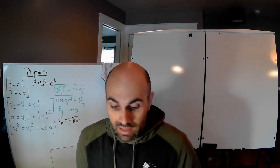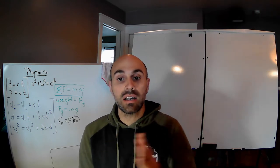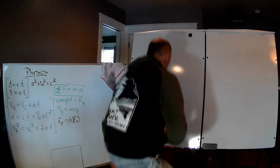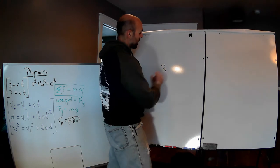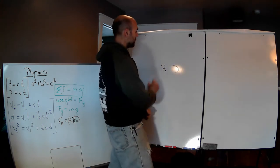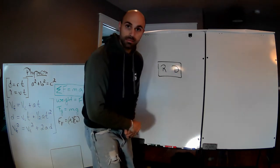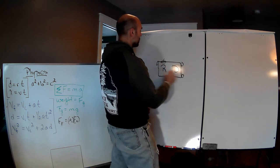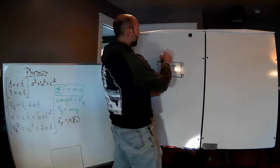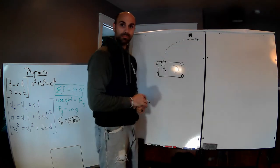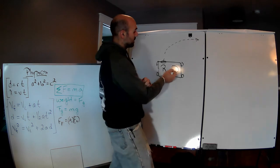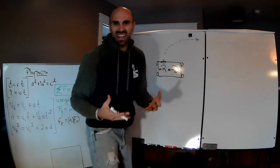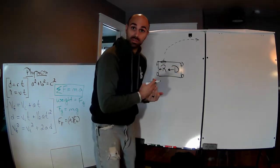Doris begins sliding along her seat and then collides with Rex. Let's get this up on the board. Here is Rex, and here is Doris — they are in a car. Here is the steering wheel, here are the tires. Rex will make a right-hand turn. As he turns to the right, Doris begins sliding this way. Rex actually slides that way too, but we're more concentrated on what Doris is doing.